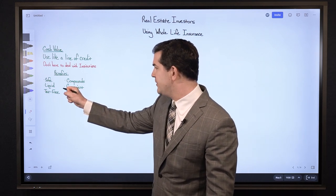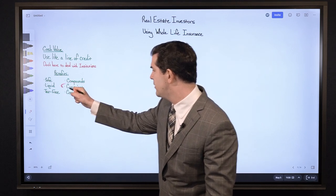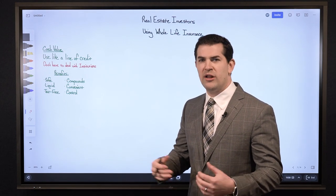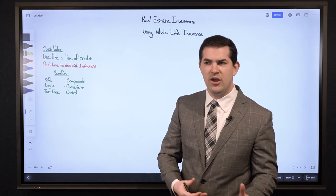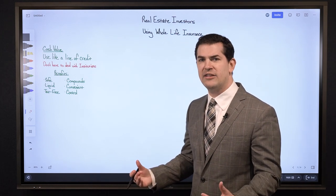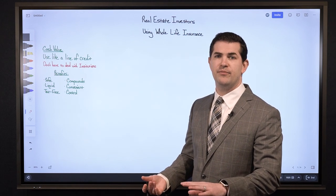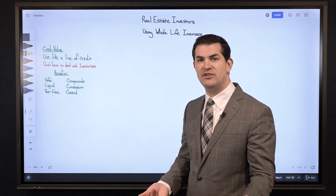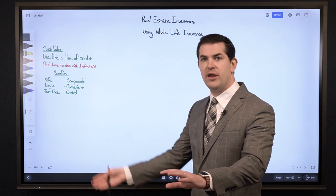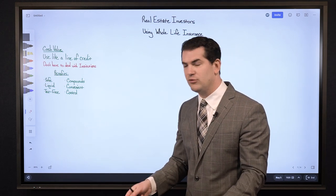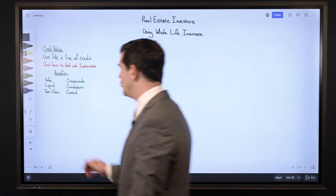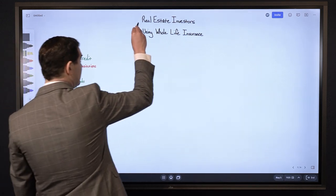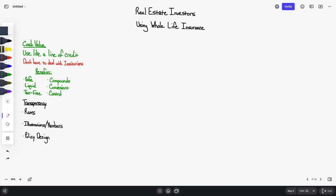The second C is convenience. Anytime you want to access your cash value, there's no qualification — you don't have to submit a new application or be re-approved. You simply request the loan, and the average turnaround time is three to five business days from request to hitting your account. The third C is control — a cash value life insurance policy gives you complete control over your funds.